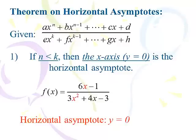Here's case number one. We've got 6x minus 1 over 3x squared plus 4x minus 3. I only worry about the 6x and 3x squared. x squared is huge compared to x when x goes to infinity or negative infinity, so the denominator is going to take over this function. In any fraction when the denominator gets much, much bigger than the numerator, the value of the function approaches zero. So when the degree of the denominator is greater than the degree of the numerator, the horizontal asymptote will be y equals zero, the x-axis. That's case number one.